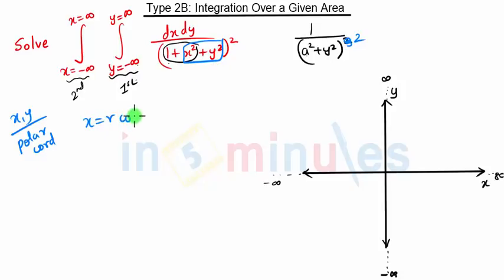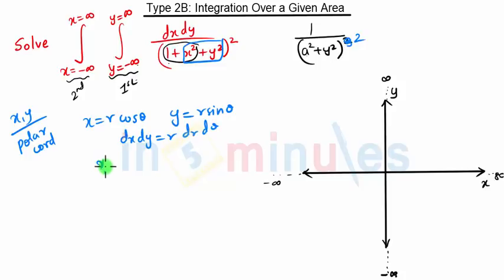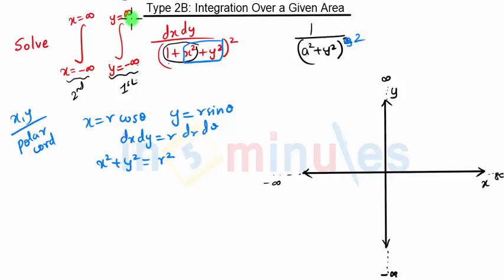So now we will put x = r cos θ and y = r sin θ. Then dx dy will be r dr dθ, and x² + y² will be r². This is our substitution or conversion into polar coordinates.